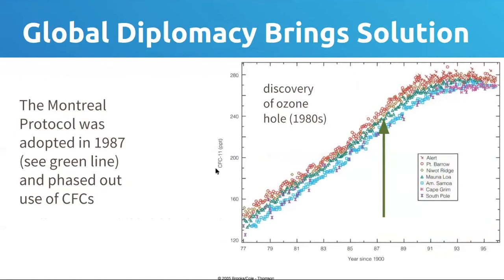That was frightening enough for the global community to get together and think we need to do something about this. Within a few years of the recognition that there was significant ozone depletion — particularly over the Southern Hemisphere — countries adopted something called the Montreal Protocol. This graph shows the chlorofluorocarbon content in the atmosphere changing through time. After the Montreal Protocol was adopted, which included phasing out the use of these damaging CFCs, you can see the concentration starts flattening out. Our emissions drop dramatically, and therefore we stabilize how much CFCs are in the atmosphere.